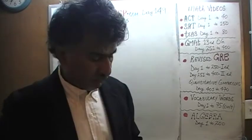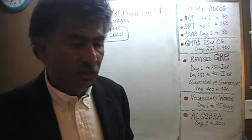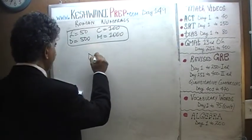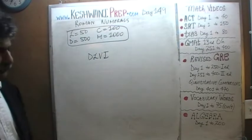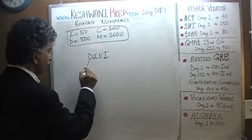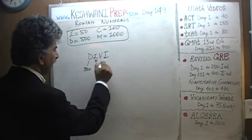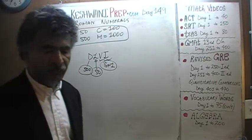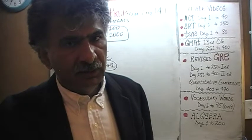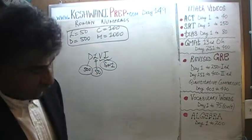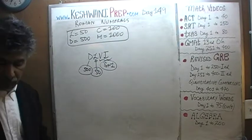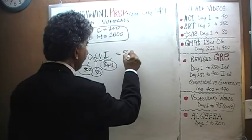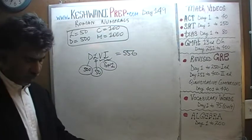I'm going to give you the problem on the blackboard. If you wish, you can pause the video and do it yourself first, then compare your work. Here's the first one: DLVI. D is 500, L is 50, and then we have 5 plus 1. So it is 500 plus 50 plus 5 plus 1 — that's 556. This is the only way the Europeans knew of writing 556. As you can see, it's a very cumbersome, laborious system.